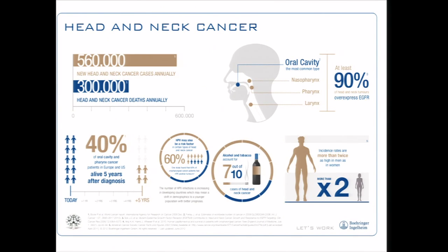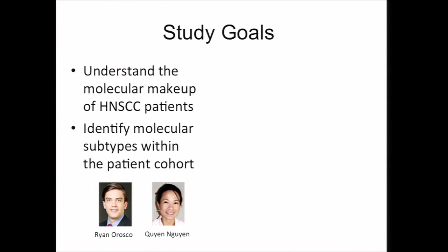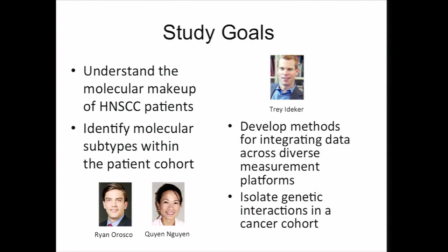We're starting to understand a little bit of the molecular basis of the disease. Outcomes still aren't very good, with limited targeted therapies and only about 40 percent five-year survival. This study started with the aim to gain a better understanding of the disease, spurred on by our clinical collaborators. From the methods side, we were looking for ways to integrate data across platforms and ultimately to isolate genetic interactions from a cancer cohort.